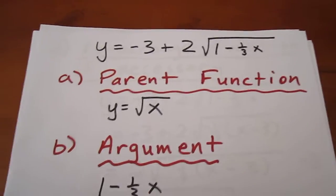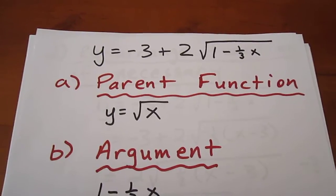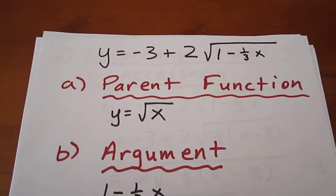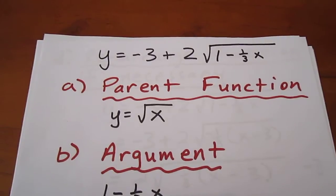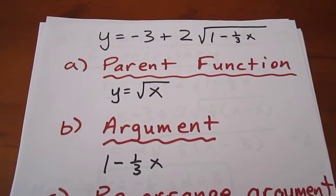But first we have to know what the parent function is, and in this case it's y equals root x. That's a pretty straightforward function, not too difficult, and it gives a good starting place for us to do our graphing. Our argument is 1 minus 1 third x.